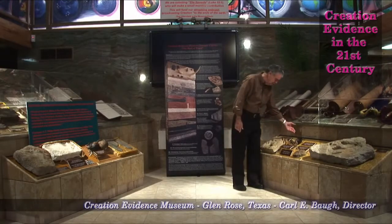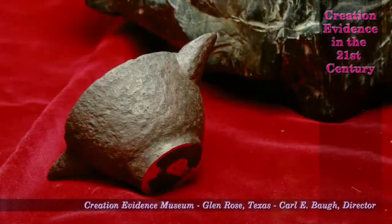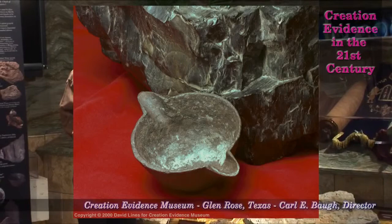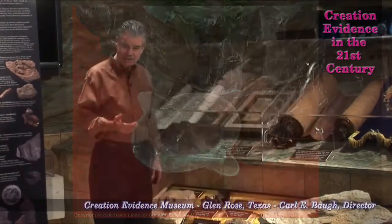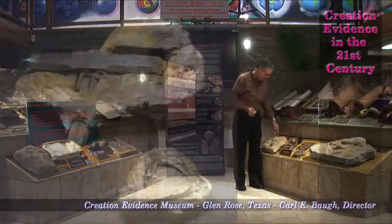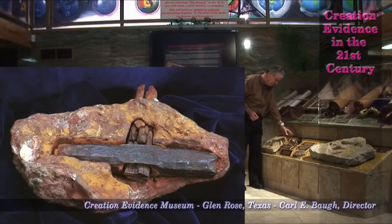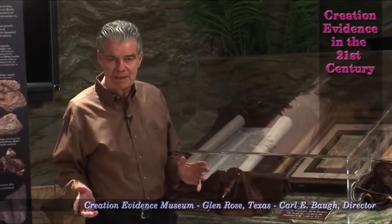In addition to that, from the Carboniferous period, from the time of the coal, we have this cup that, according to evolutionary theory, is in material supposed to be 400 million years old. In addition to that, we have the Iron Hammer — the London artifact from London, Texas — in rock that's supposed to be 110 million years old.